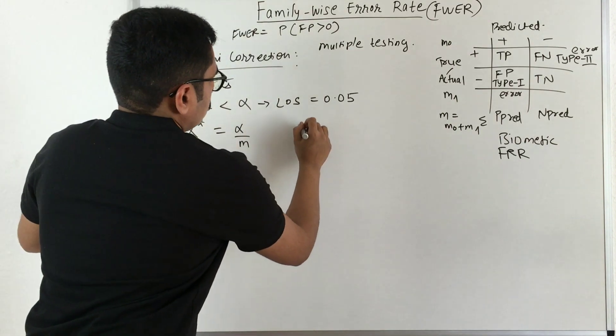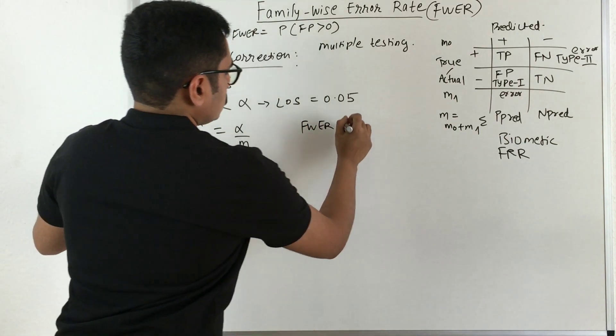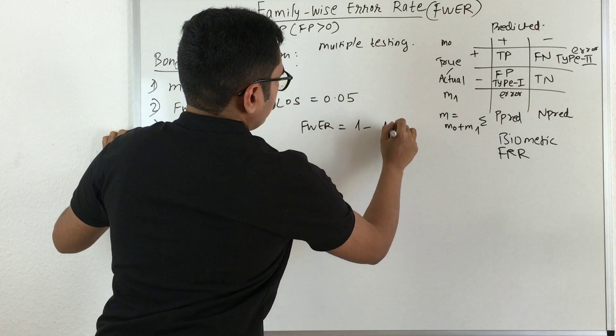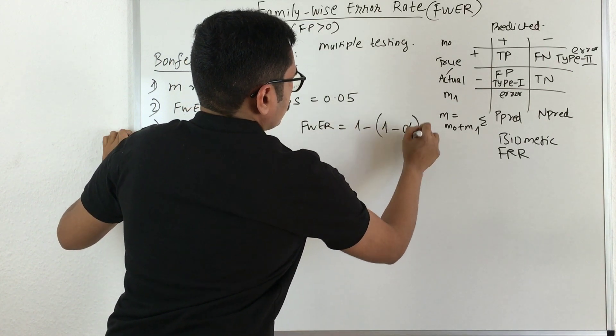Now the family-wise error rate in its mathematical estimate is given as 1 minus (1 minus alpha) raised to M.